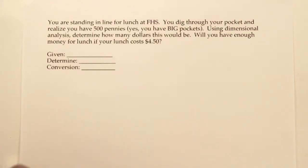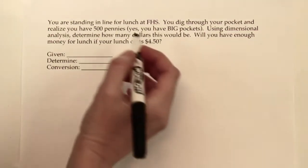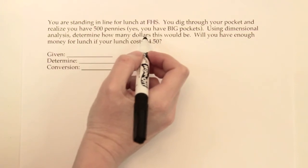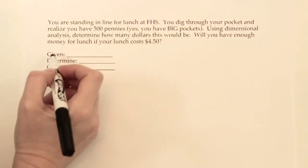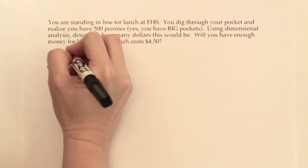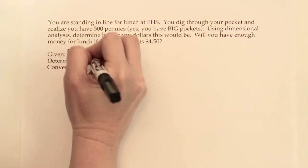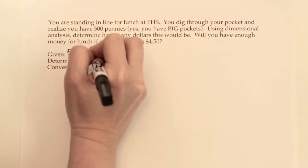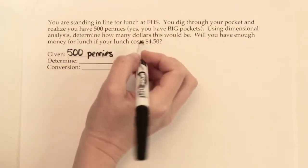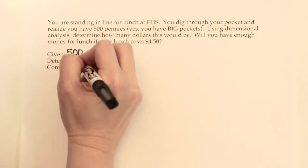For this next problem, very similar to the previous problem where we were trying to figure out quarters, we're going to do another money conversion factor. We're trying to see if you had 500 pennies, how many dollars that would be. The given is whatever piece of information you're told in the problem, so we're told that we have 500 pennies. We want to know how many dollars this would be.